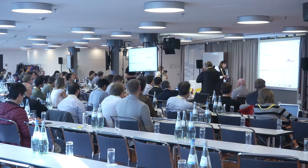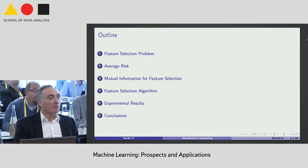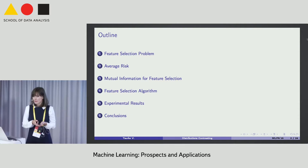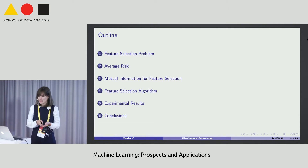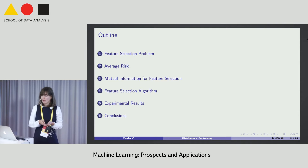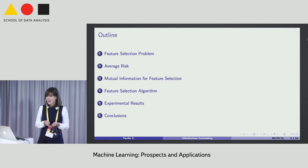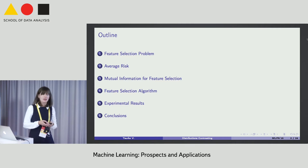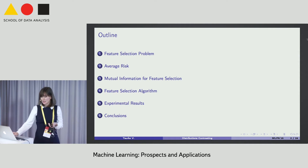Hello. I will speak about the feature selection problem and the procedure of conditional distribution contrasting. First of all, I will formalize the feature selection problem and consider two criteria for feature selection: average risk maximization and mutual information maximization, proposed by Vladimir Vapnik and Rauf Ismailov. Then I will formalize the feature selection algorithm itself and show some experimental results. In the conclusion, I will speak about advantages and disadvantages of the considered methods.